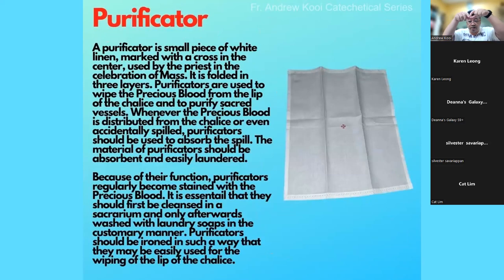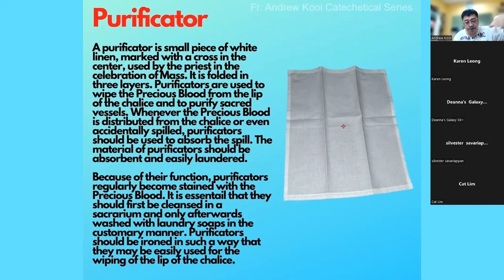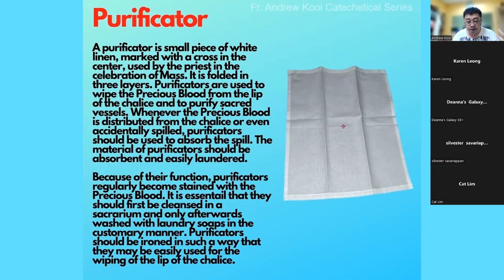On top of or diagonally across the chalice we put what we call a purificator. The purificator is used to wipe the inside of the chalice of any precious blood which might be on the lip or inside the chalice, or after water has been poured inside to clean it. The purificator, just like the corporal, is washed in a special basin at the sacristy after Mass. The sacristan normally washes a bunch of purificators together to not waste water.